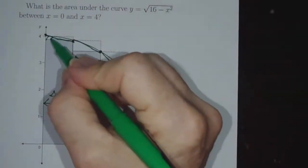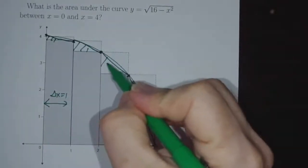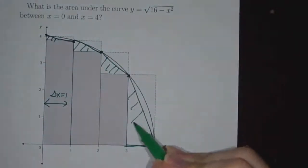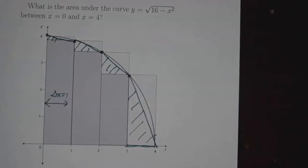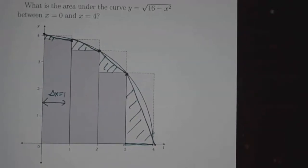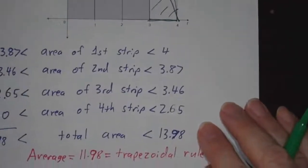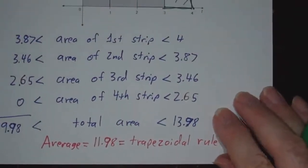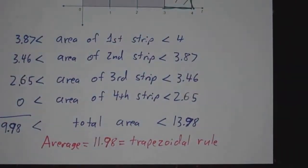So by taking half of what's on top, what we're doing is we're not adding the areas of a bunch of rectangles, we're adding the areas of a bunch of trapezoids, which is why taking the average of the upper bound and the lower bound is called the trapezoidal rule.